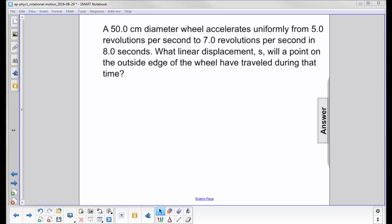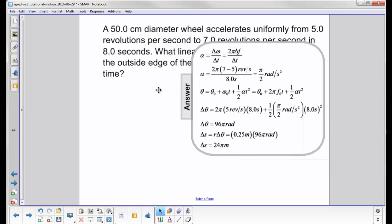A 50-centimeter diameter wheel accelerates uniformly from 5 revolutions per second to 7 revolutions per second in 8 seconds. What linear displacement S will a point on the outside edge of the wheel have traveled during that time?